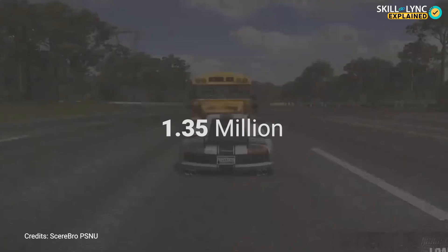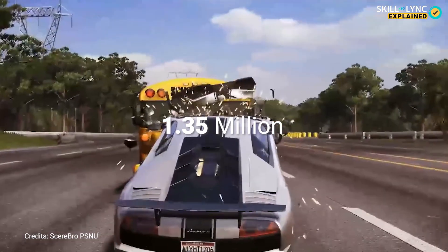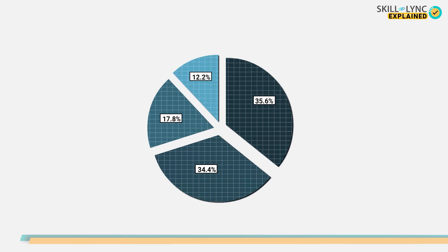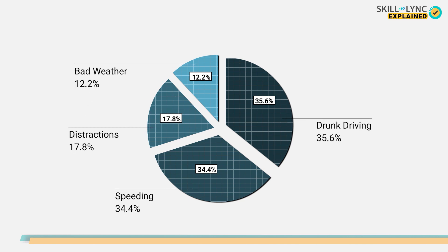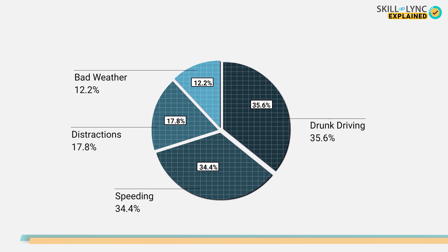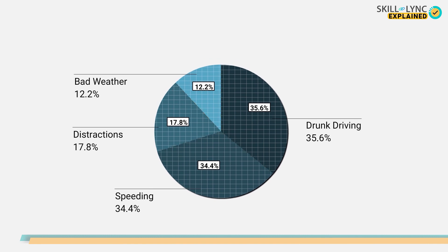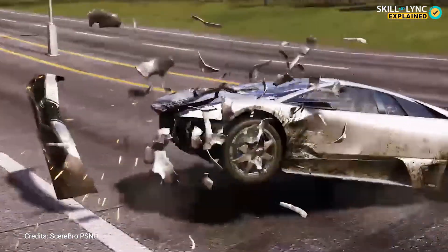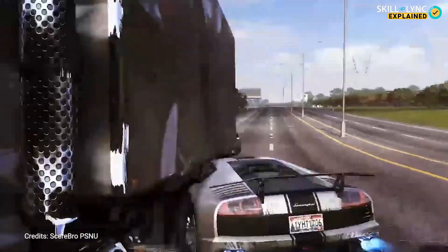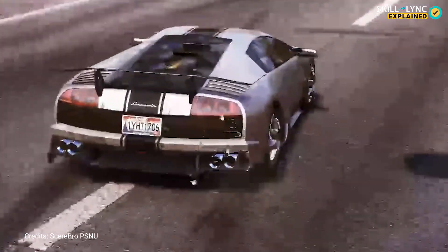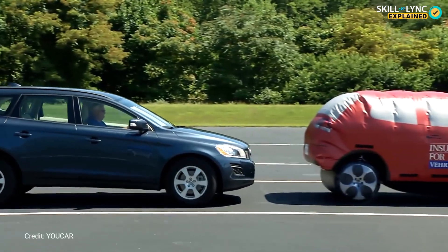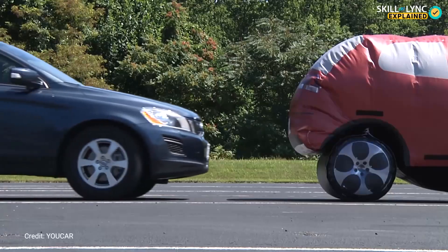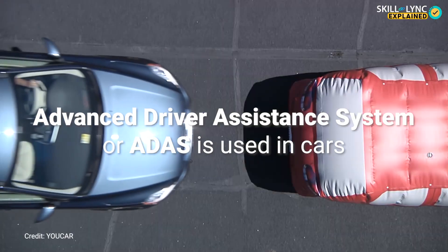Road accidents claim up to 1.35 million lives each year. A survey showing the various reasons leading to car accidents is shown here. Being self-cautious on the road is one of the most basic ways in which road accidents can be minimized. The carelessness of a driver not only may result in the loss of his life, but it may also cause the loss of an innocent life.